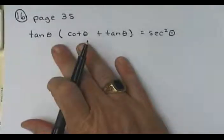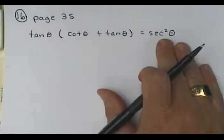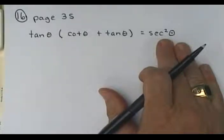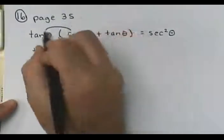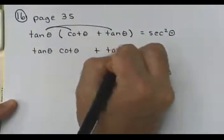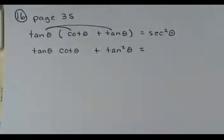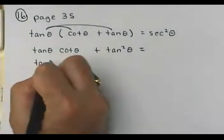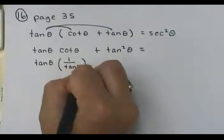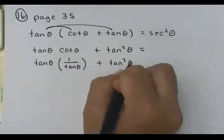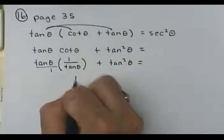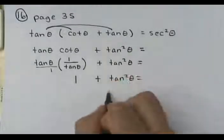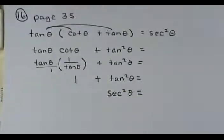I want to manipulate this to get it to be secant squared theta. Secant squared theta is tangent squared theta plus 1. I'm going to distribute the tangent: tangent times tangent is tangent squared. Cotangent is the reciprocal of tangent, so tangent times 1 over tangent equals 1. Then 1 plus tangent squared is your Pythagorean identity equal to secant squared theta — and there we have verified.